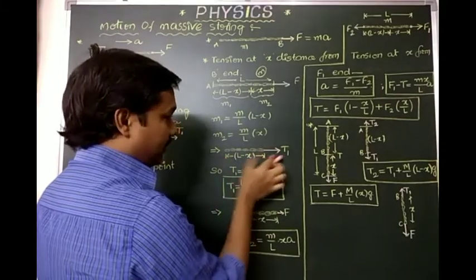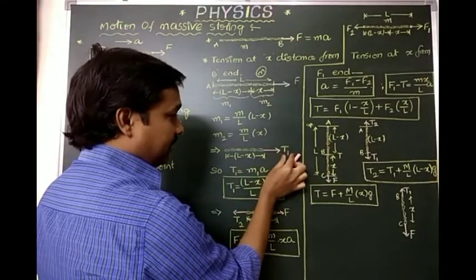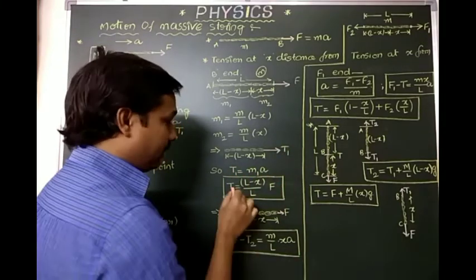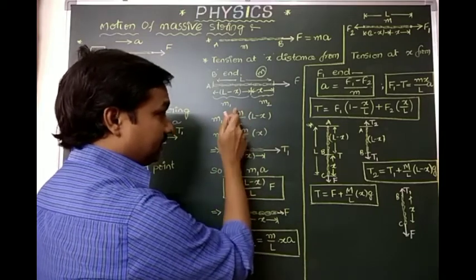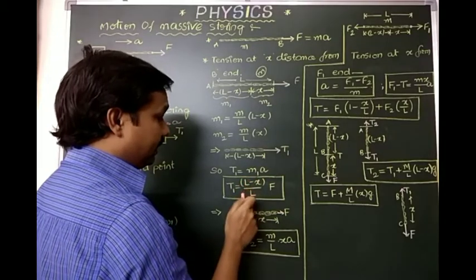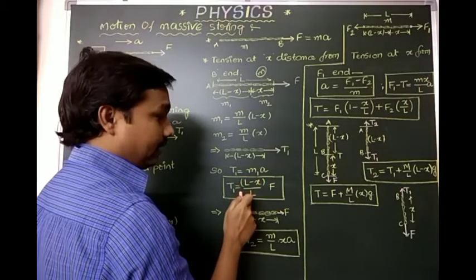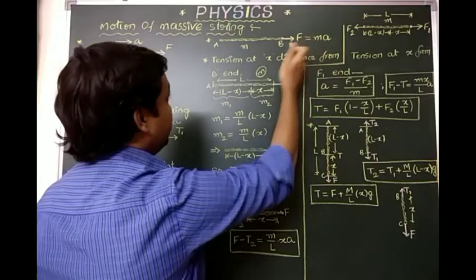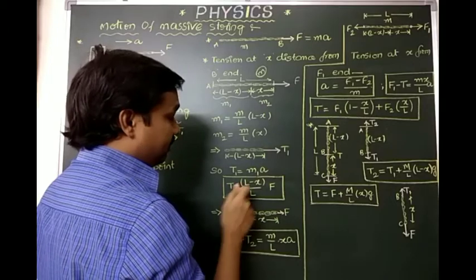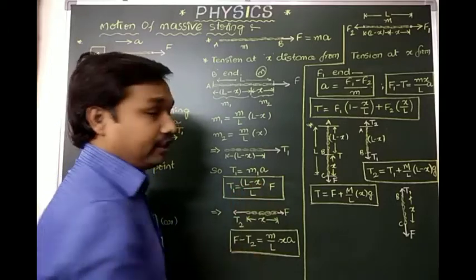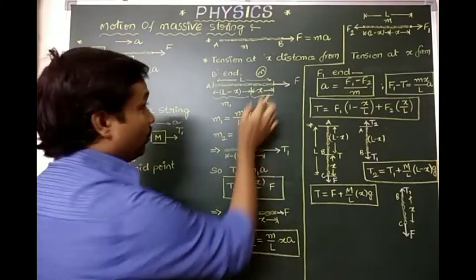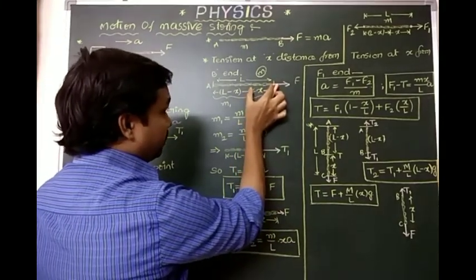The tension T1 on the (l minus x) side is T1 equals m1 times a. Substituting m1 = m(l−x)/l and a = F/m, the mass m cancels, giving T1 equals (l minus x) divided by l, times F. This is the tension at distance x from end B on the far side.